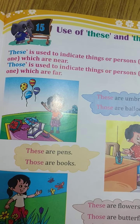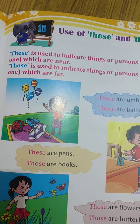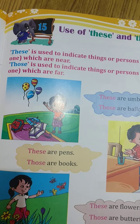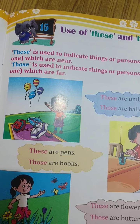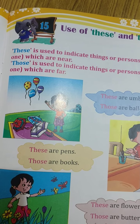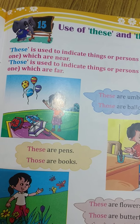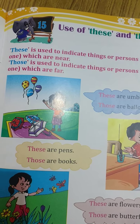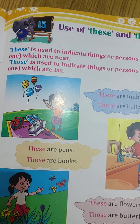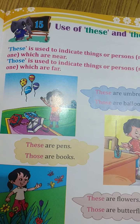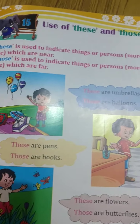'This' and 'these' are both used to indicate things that are near to you. 'That' and 'those' are used to indicate things that are far from you.